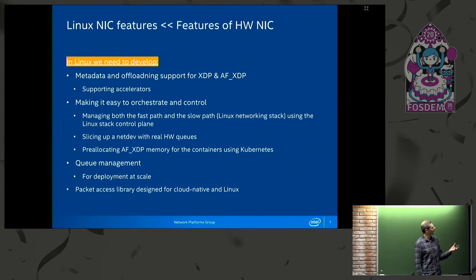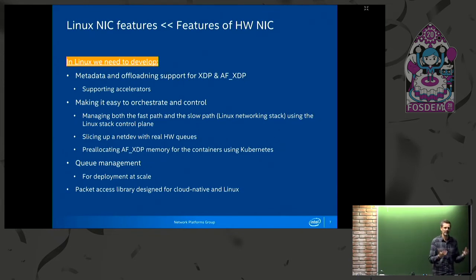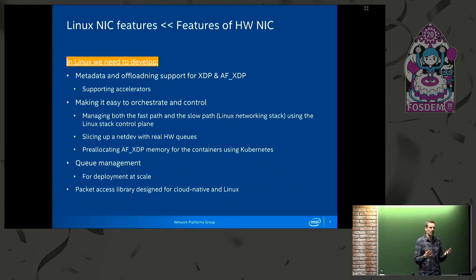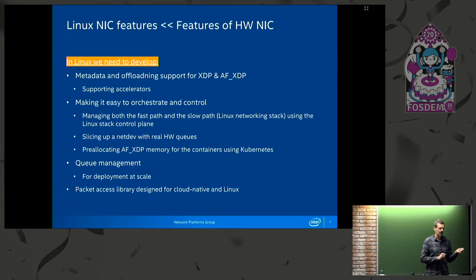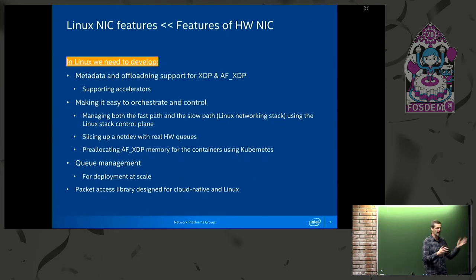The key problem is that with SRIOV and user-space drivers you can use all the features that the NIC has to get really good performance. But the main purpose of an operating system is to abstract away the hardware, so by definition an operating system cannot expose all the features that the NIC has. It's always going to be much fewer features at the OS API level than you have on the hardware. So what I'm asking is: what do we need to develop in Linux to make cloud-native network functions with all drivers inside Linux feasible?